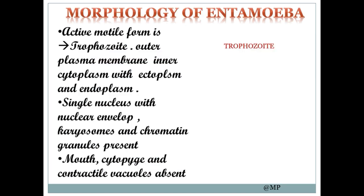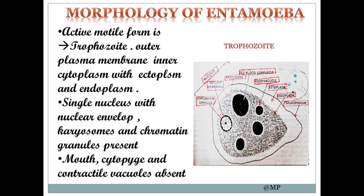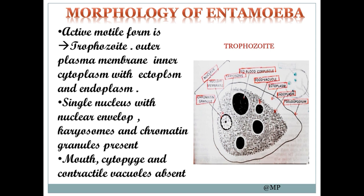The morphology of Entamoeba: its active motile form is called the trophozoite. It has an outer plasma membrane and inner cytoplasm with ectoplasm and endoplasm. The nucleus is single with a nuclear envelope, karyosomes, and chromatin granules. Mouth, cytopyge, and contractile vacuoles are absent. You can see all these structures in the diagram.